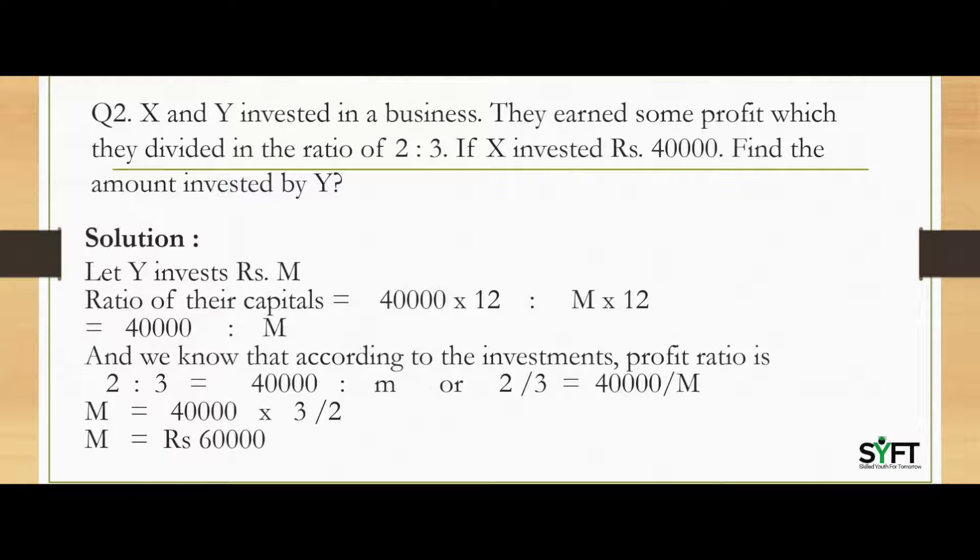Both partners are investing their money for 12 months but we don't know the amount invested by Y. So let's assume that Y invested Rs.M. Now the ratio of their capital will be 40,000 into 12, the sum invested by X for 12 months, is to M into 12.